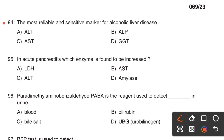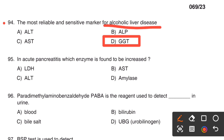Next one. The most reliable and sensitive marker for alcoholic liver disease: Option A, ALT. Option B, ALP. Option C, AST. Option D, GGT. The marker for alcoholic liver disease is GGT, or gamma glutamine transferase.